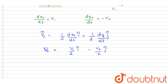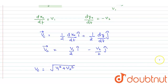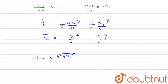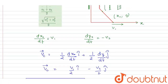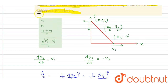We can get the magnitude by squaring and adding the components, then taking the square root. The magnitude equals √(v1² + v2²) / 2. This is the answer, and option D is the correct option.